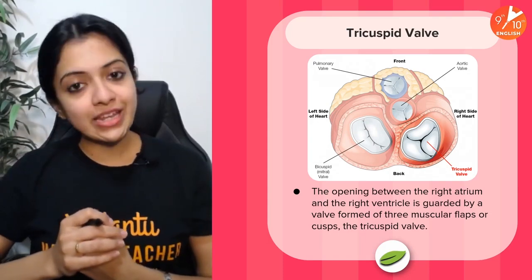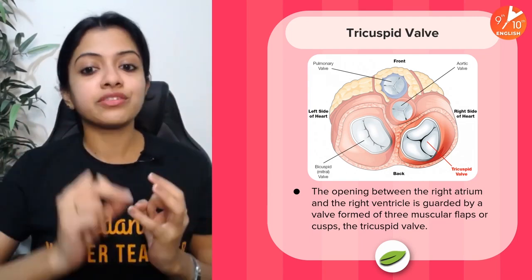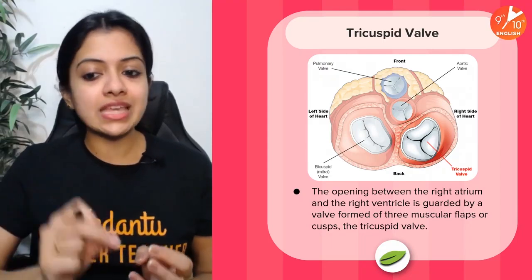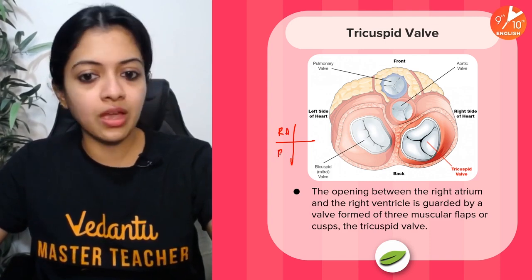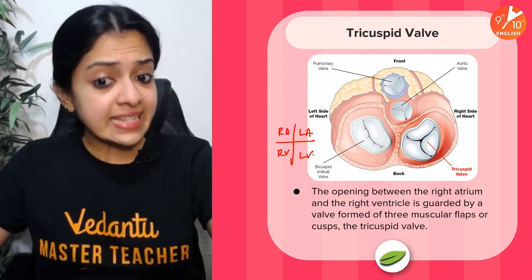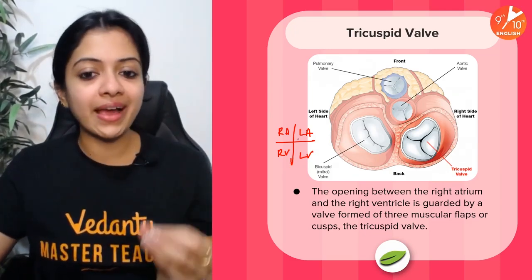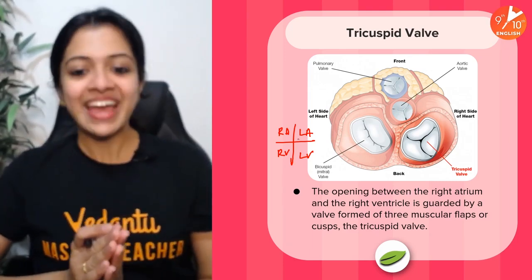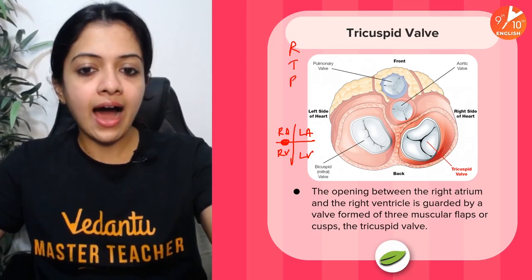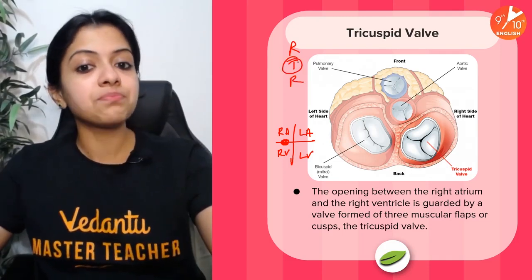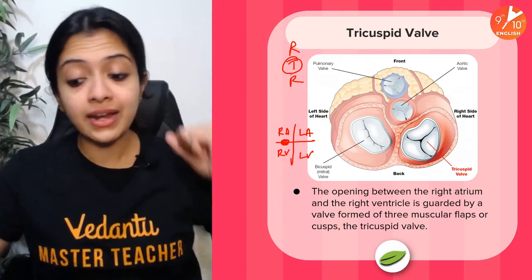The next major aspect we need to know about our heart is the presence of valves. We've got three major types of valves in the human heart. The first one is the tricuspid valve, which guards the opening between the right atrium and the right ventricle. Remember RTR — tricuspid valve is found between the right atrium and the right ventricle, preventing backflow of blood.